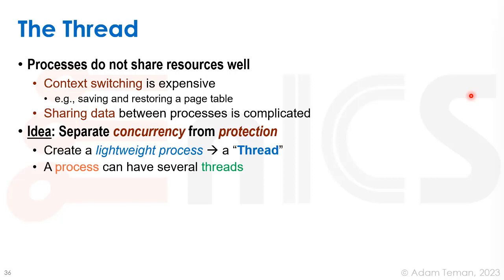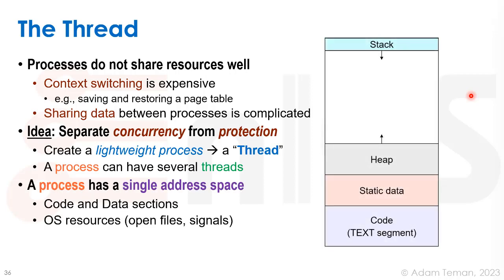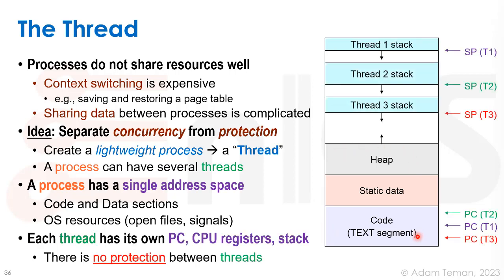A process can have several threads — several lightweight processes. A process has a single address space: a memory map with a code/text segment storing the program, a static data segment for globals and static variables, a stack growing from top to bottom, and a heap growing from the other side, plus resources like open files and signals. A thread uses the same basic memory area as the process — it does not get its own memory allocated.